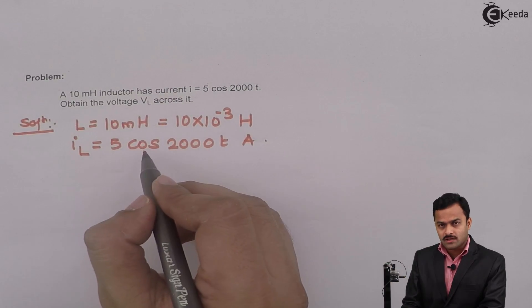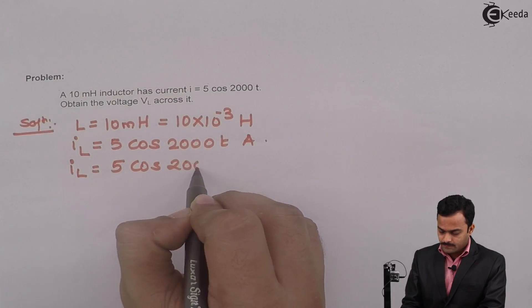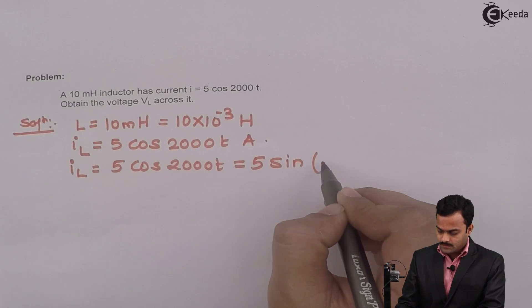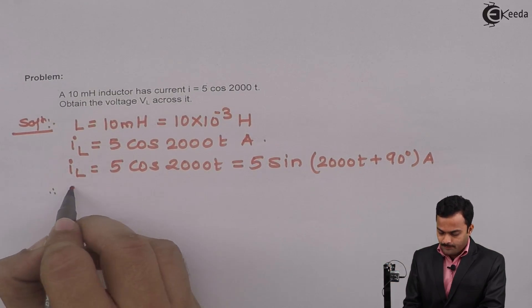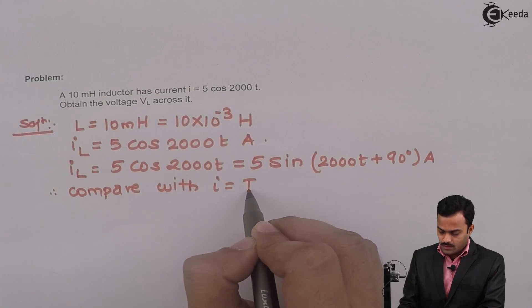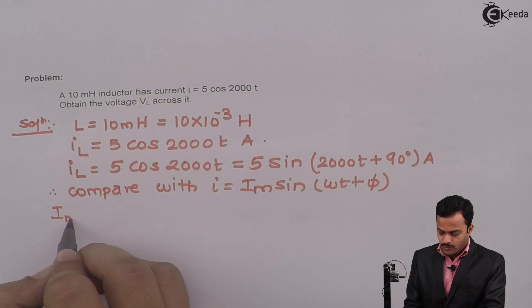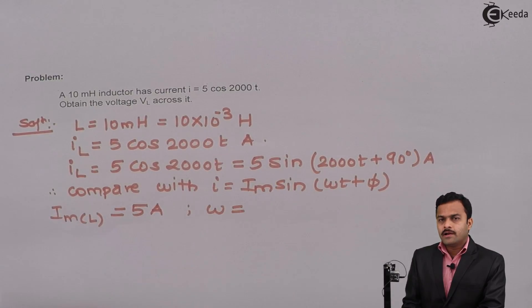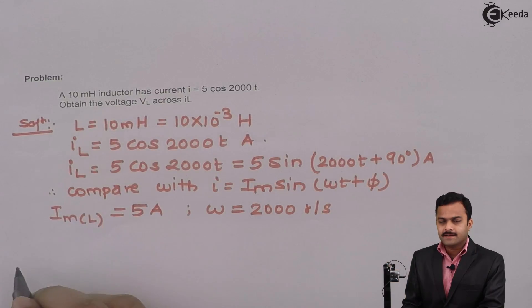I cannot compare with the standard equation because of cos, so I can convert this I_L as 5 sin (2000t + 90°) ampere. Once I compare with I equal to I_m sin (ωt + φ), I will get the maximum value of current flowing through the inductor as 5 ampere, angular frequency 2000 radian per second, and phase angle 90 degrees.